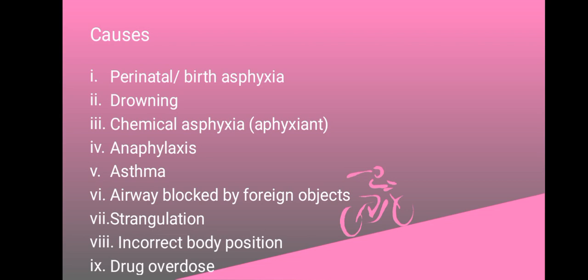Incorrect body position can also block airways, and this is referred to as positional asphyxia. You also have drug overdose — drugs like opioids can interfere with the brain's ability to regulate breathing. That is a brief overview of what asphyxia is.